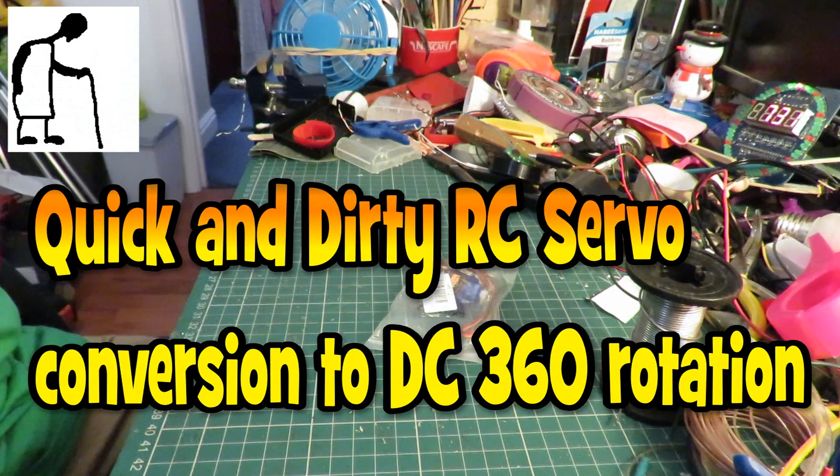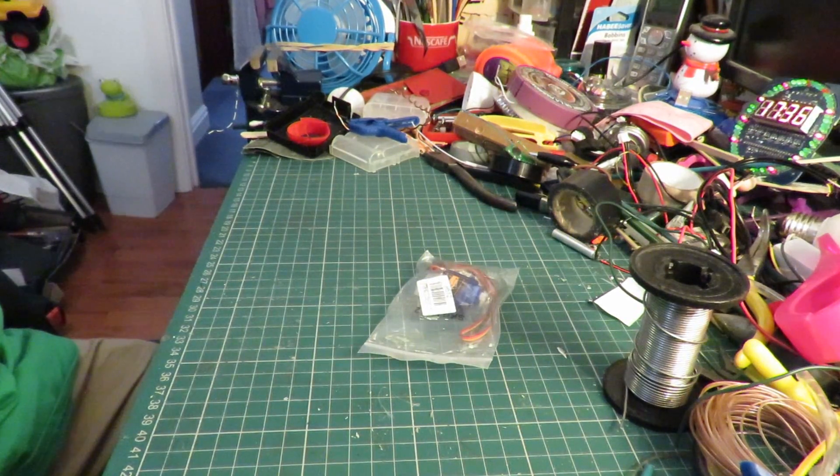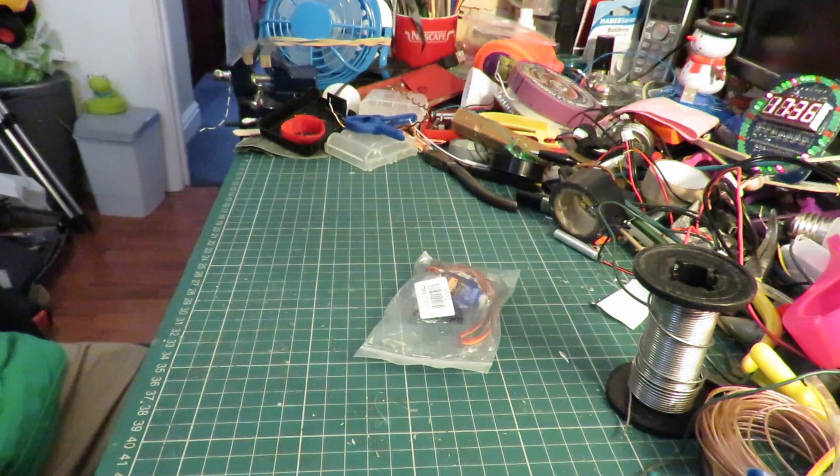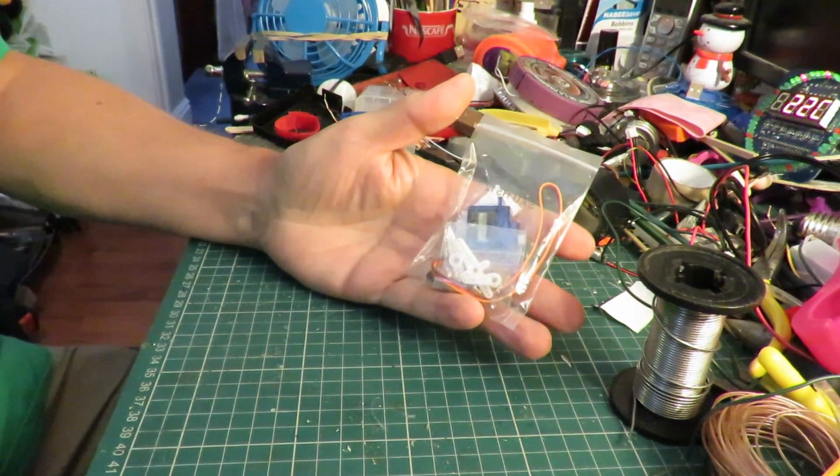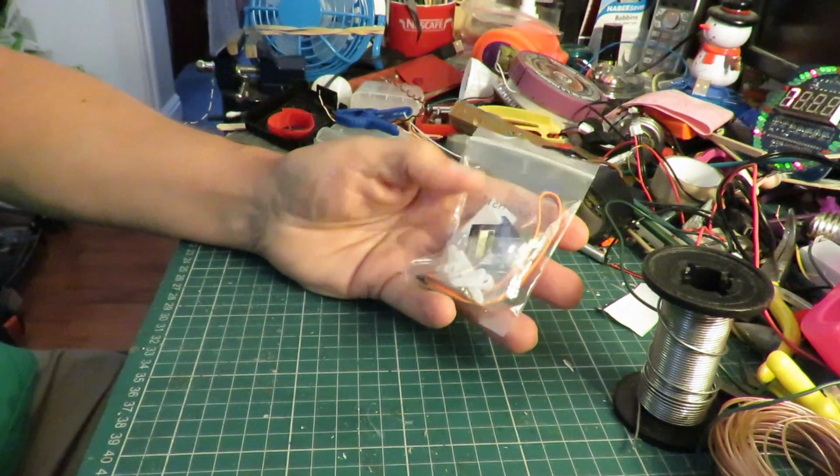Hi guys, I need a slow turning motor or a low geared motor for one of my projects and one of the quickest and easiest ways of getting one of them is to use a radio-controlled servo but take the circuit board out of it.